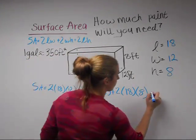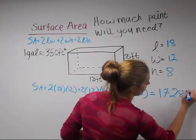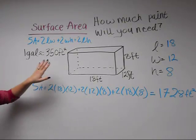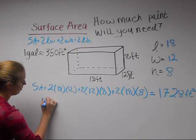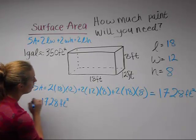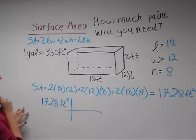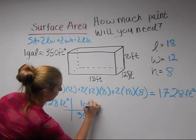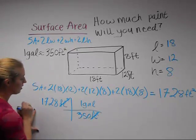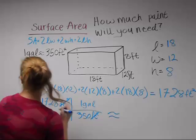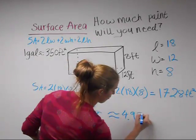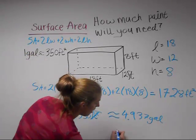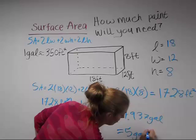That gives us the surface area of your room, which is equal to 1,728 square feet. So now we know how many square feet of space you need to cover. We're going to use a conversion factor: one gallon covers about 350 square feet of space. Our units cancel and this gives us about 4.937 gallons. But you can't buy 0.93 of a gallon, so you're going to need to round up and tell your mom that you're going to need 5 gallons of paint.